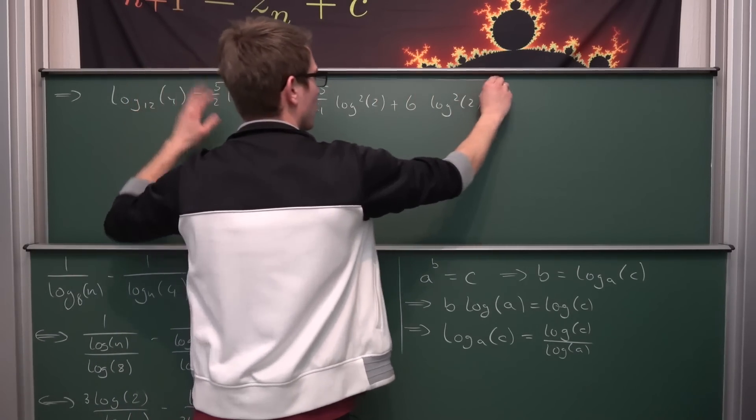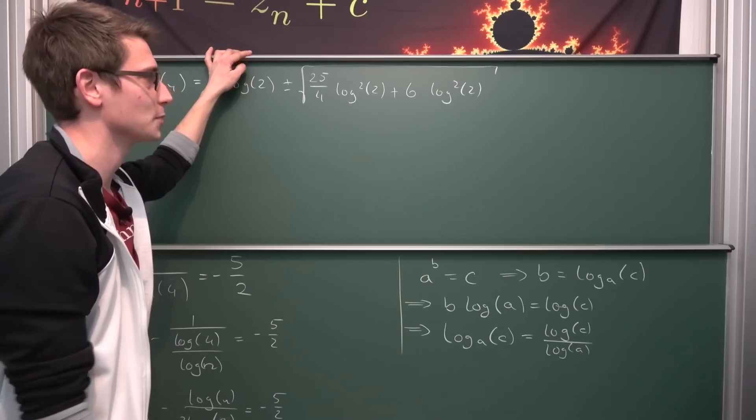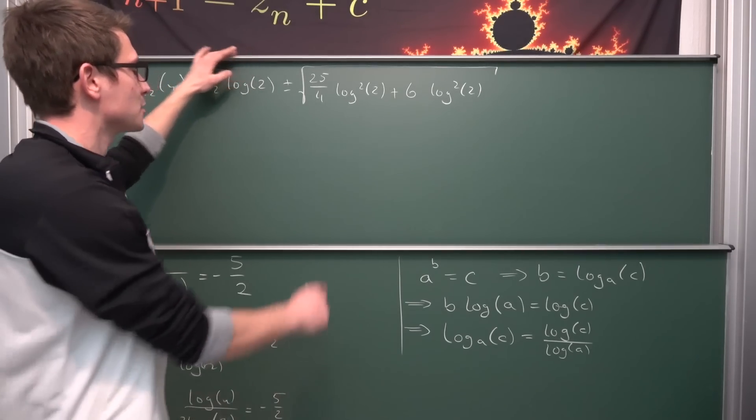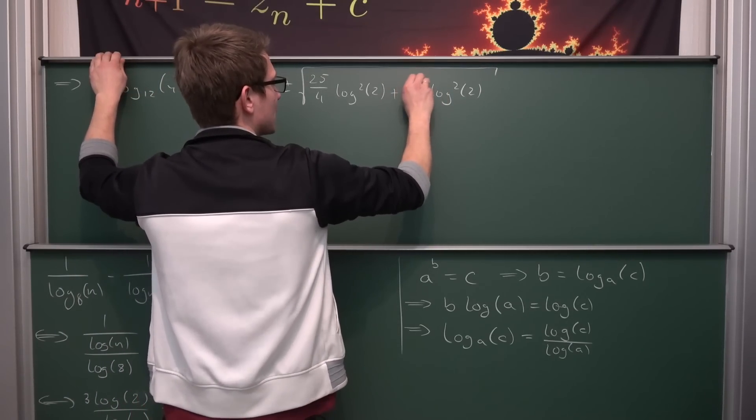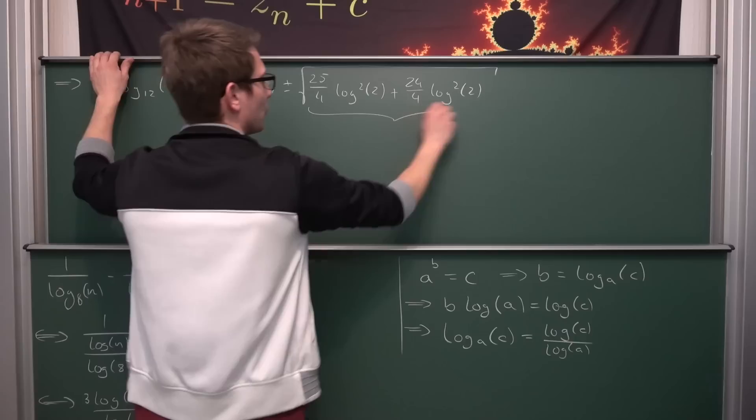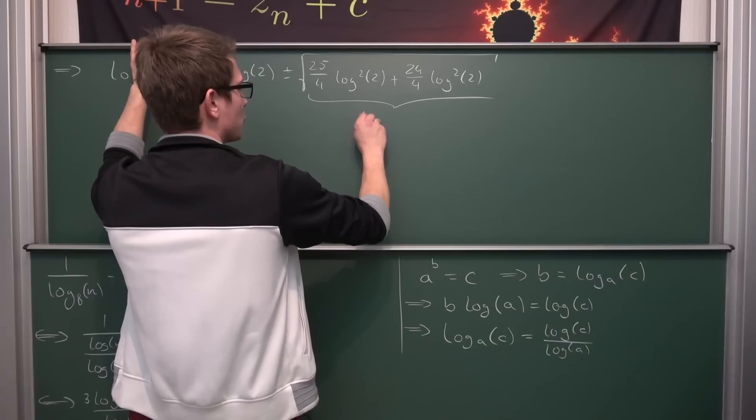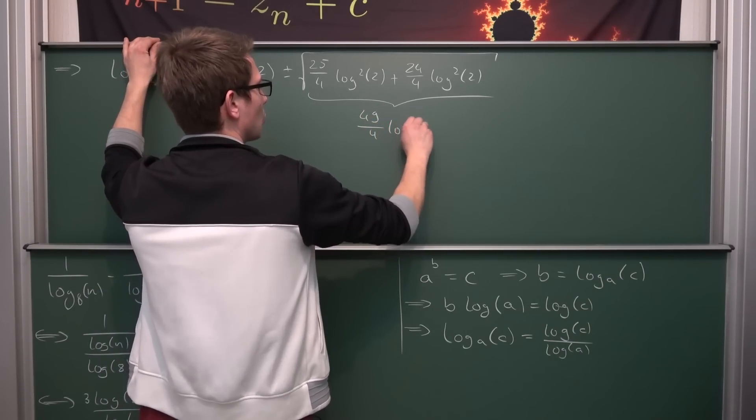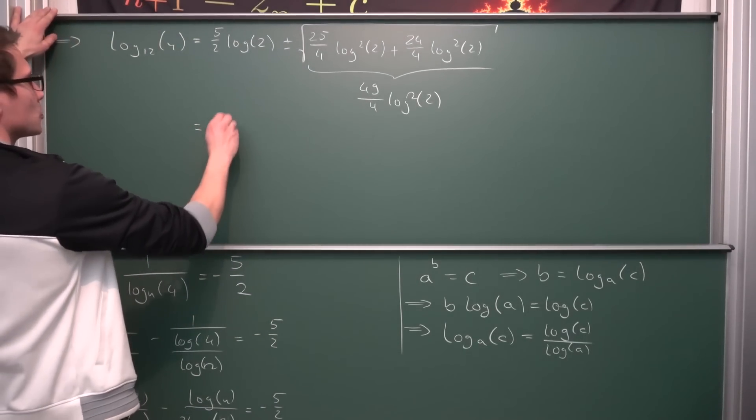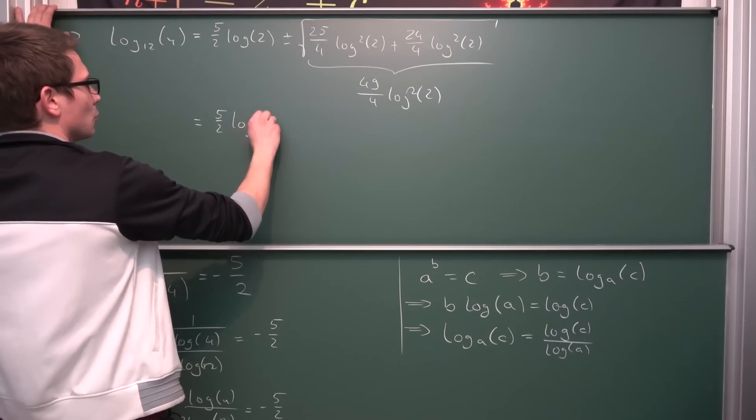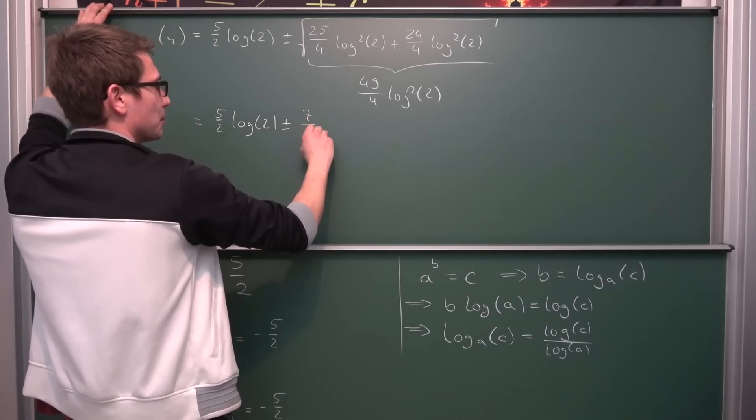This right here is our quadratic formula and now we can start simplifying. Let's bring it onto the same denominator. Expanding 6 by 4 over 4 giving us 24 over 4. Meaning in the discriminant what we are going to get is 25 plus 24, giving us 49 divided by 4 times log squared of 2. If we take the square root of that we are going to get 5 over 2 times log of 2 plus or minus the square root of 49 is 7 divided by 2 times log of 2.